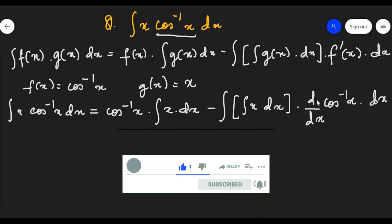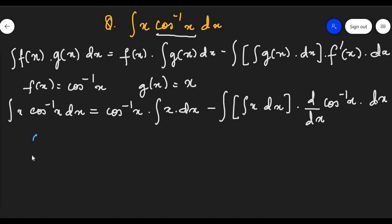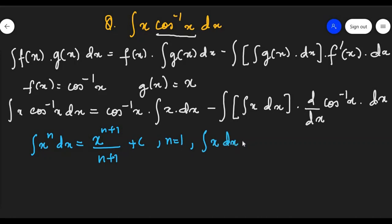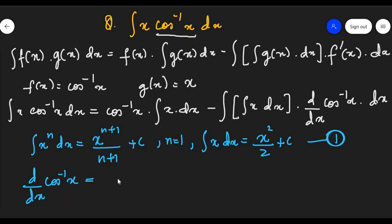Now we need to find the values of these two. We know that integration of x raised to n dx can be given as x raised to n+1 upon n+1 plus c. In our problem n equals 1, so integration of x dx is x squared by 2 plus c. Let us call this equation number 1. Next, the differentiation of cos inverse x is minus 1 upon square root of 1 minus x squared. Let us call this equation number 2.